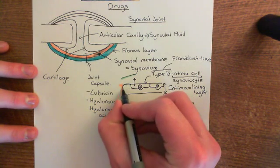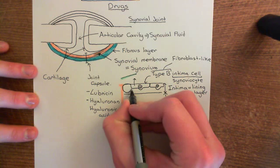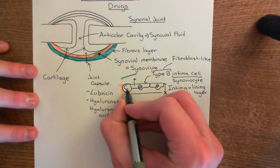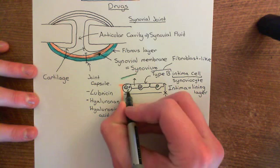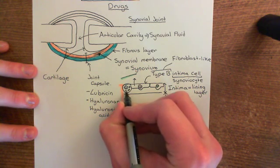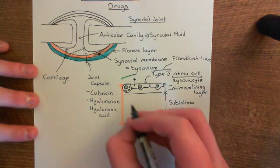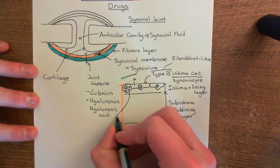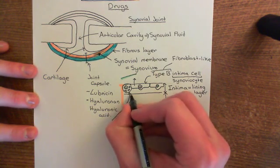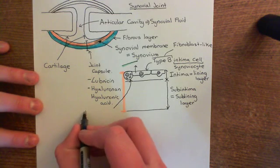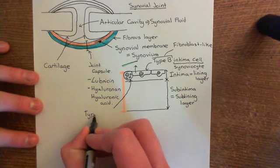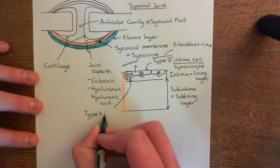There is another type of cell which faces into the articular cavity. It has a nucleus, and also this cell type has very prominent mitochondria. What is this cell? It's what is known as a type A intima cell, or a type A synoviocyte.